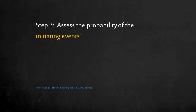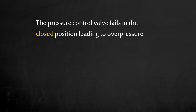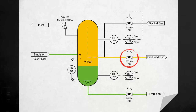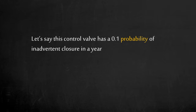Step 3: we need to determine what initiated the consequence and how likely it can happen. The cause of a deviation in a HAZOP is the initiating event in the LOPA. For our case, the initiating event is the pressure control valve failing in the closed position. There is blocked flow of the produced gas line when PV100 is closed, causing V100 to overpressure. The pressure control valve has a 0.1% probability of failing closed in a year — or once in 10 years.